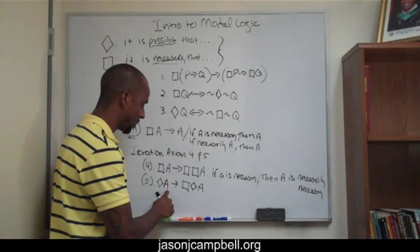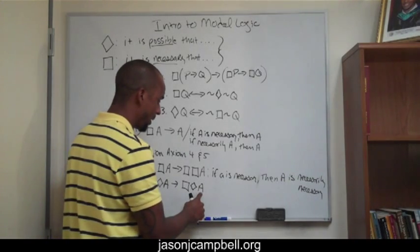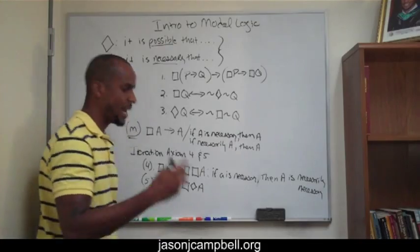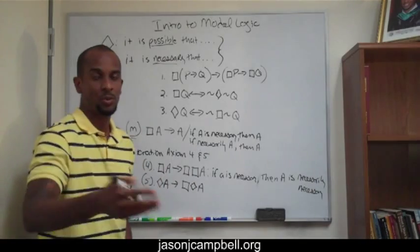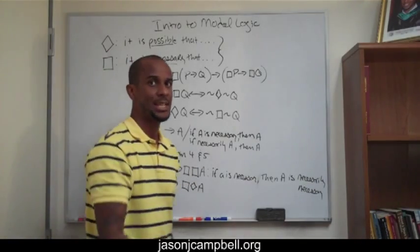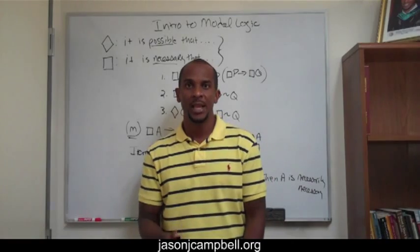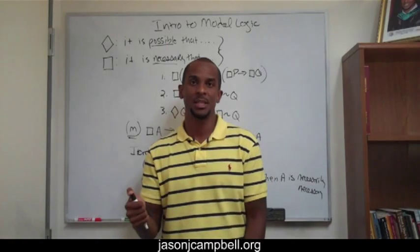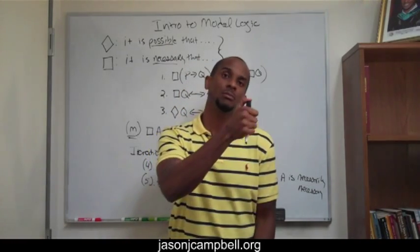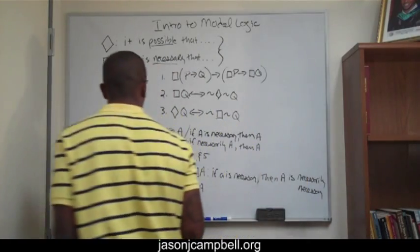If A is possible, then A is necessarily possible. It has to be possible. If I'm saying something could exist, then it has to be the case that that thing could exist. That's basically what Axiom 5 is saying.